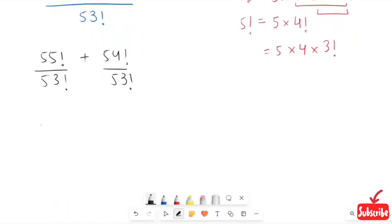This factorial of 55 I'm going to write as 55 times 54 times 53 factorial. Why I end up with 53 factorial? Because our denominator is 53, that's why I end up the numerator with 53 factorial.